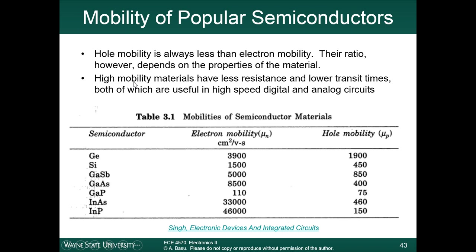Another advantage of high mobility materials is that they have lower transit times. In a transistor, the electrons transit between the source and the drain. The faster the electrons can travel through the transistor, ultimately the faster the transistor will operate. High mobilities are important for high-speed electronics — high-speed digital circuits and high-speed analog circuits. This is why some of the higher-speed materials are used for high-speed receivers and high-speed microprocessors. Silicon has, compared to these other materials, relatively low performance.